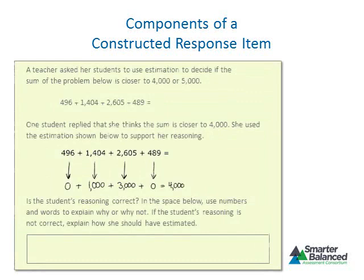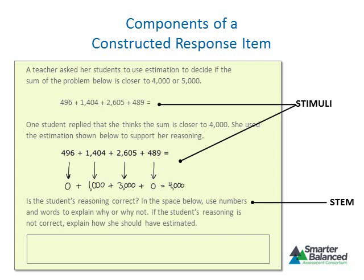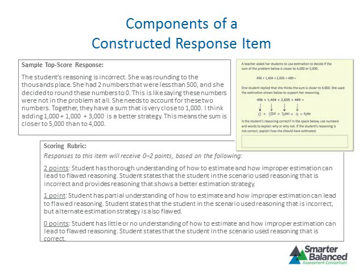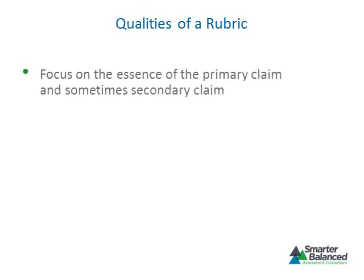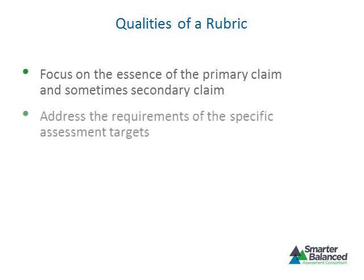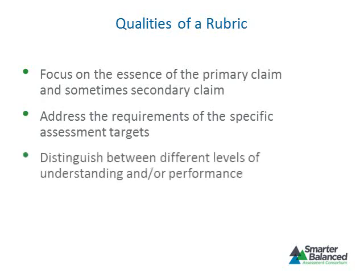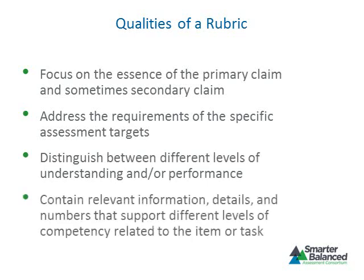All constructed response items include a stem, stimulus, scoring rubric, and a sample top score. The scoring rubric should reflect the values set out for the claim being assessed, giving substantial weight to the choice of appropriate methods for solving the problem, to reliable application of skills, and to explanations of what has been found. The sample top score is an example of a complete and thorough response at the appropriate grade level. The rubric language should focus on the primary claim, address specific assessment targets, distinguish between levels of understanding, and contain relevant information supporting different levels of competency.